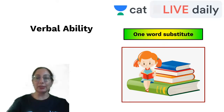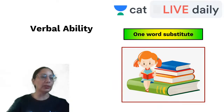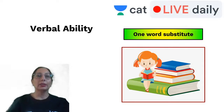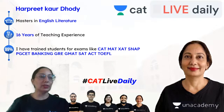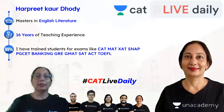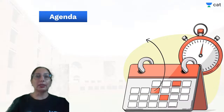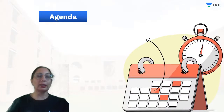Let's get into the lesson. We are going to do what is known as verbal ability — one word substitute is the question type here. My name is Harpreet Kaur-Dhodi. I've done my master's in English literature. I have 16 years of teaching experience. I have trained students for exams like CAT, MAT, XAT, SNAP, banking, PGCT, GRE, GMAT, SAT, ACT, and TOEFL. The agenda today is to do one word substitute.